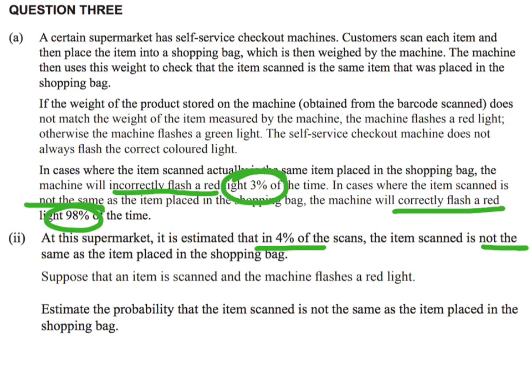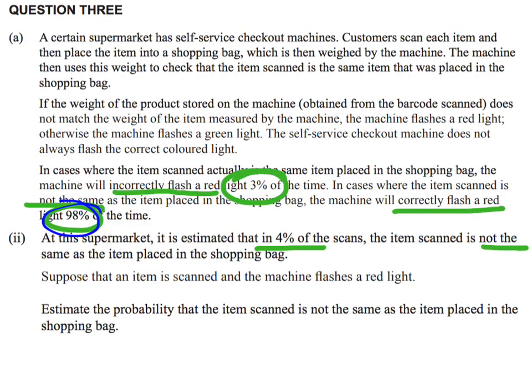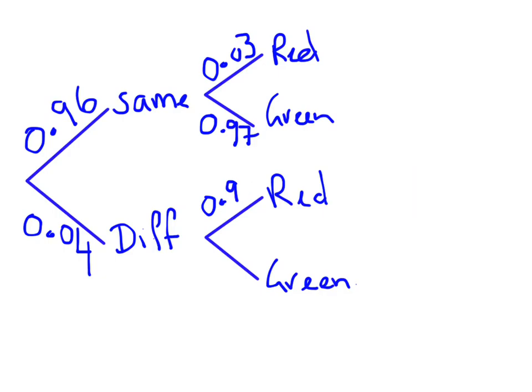Then there's the 98%: when the item scanned is not the same, the machine correctly flashes a red light 98% of the time. So on the 'different' branch, red occurs 98% of the time, which means a green light occurs 2% of the time when it should actually have been red.